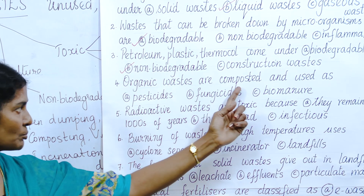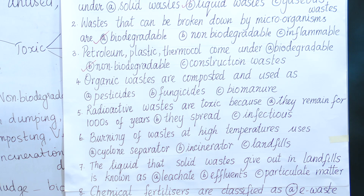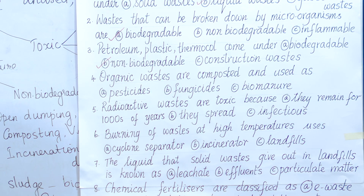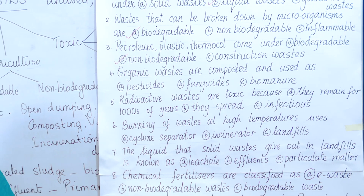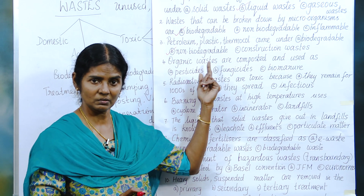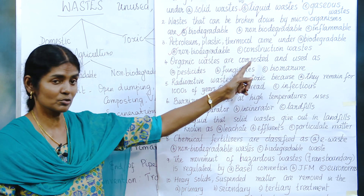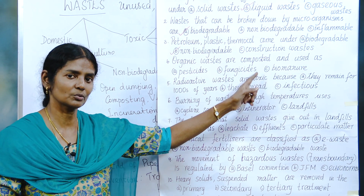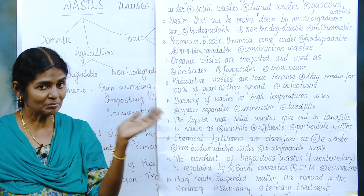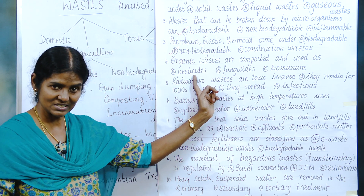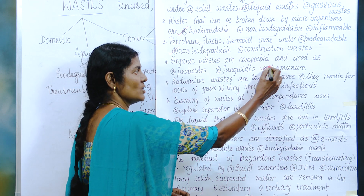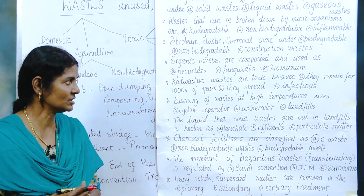Organic waste are composted and used as — when we take organic waste, anything from dead plants or animals forms organic waste. When they are composted, in this case it is domestic waste being composted. Do you get pesticides or fungicides? No. They form something called biomanure, which is very good for plants.